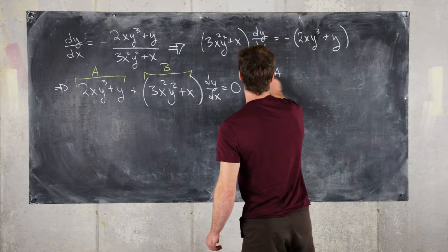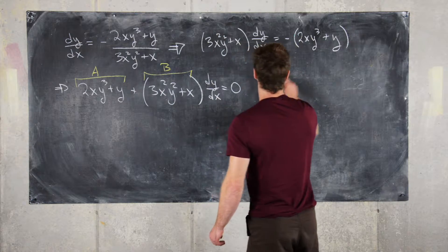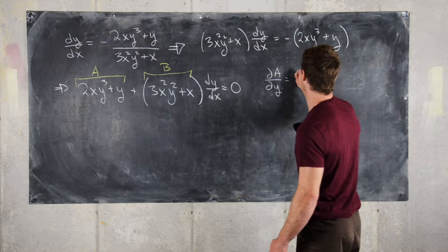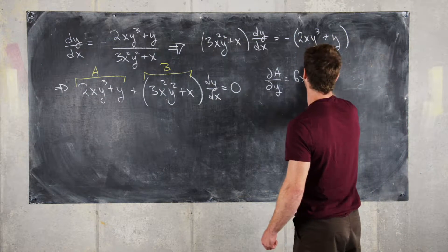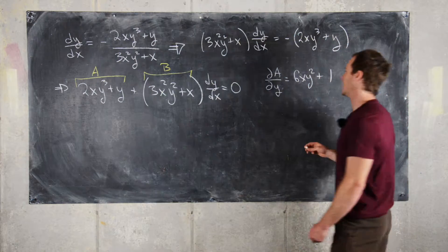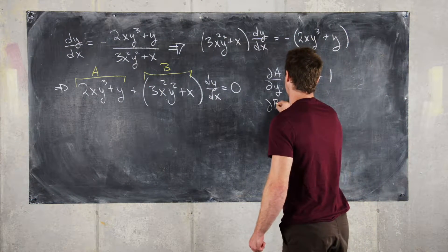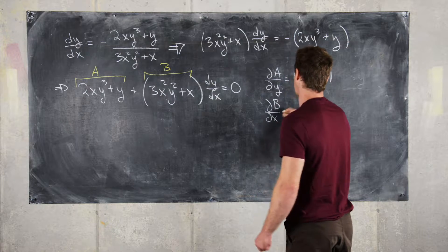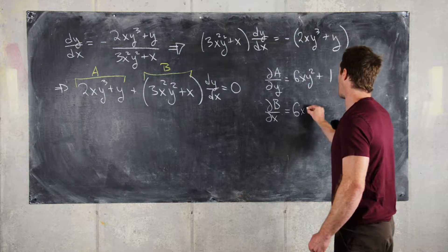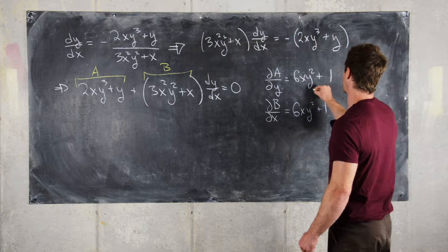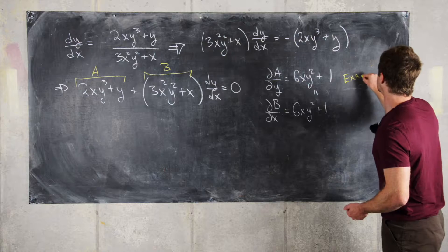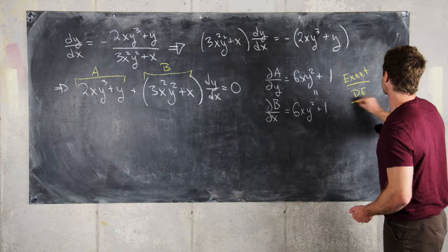Taking the partial of a with respect to y gives us 6xy² plus 1. Taking the partial of b with respect to x also gives us 6xy² plus 1. Since these are equal, this is an exact differential equation.